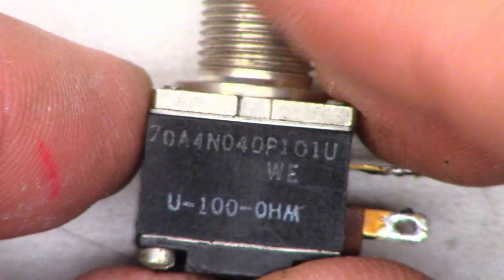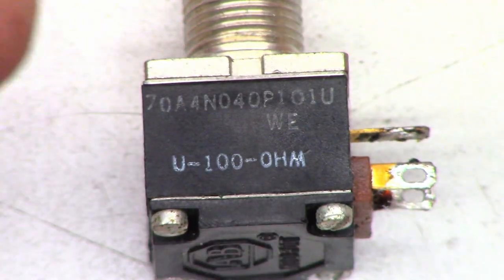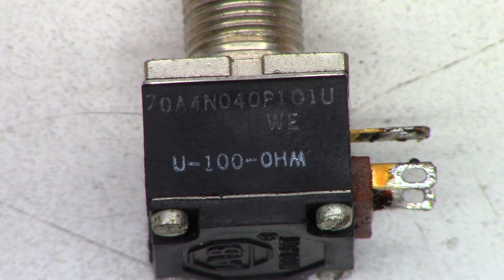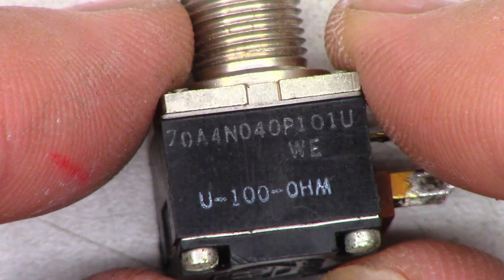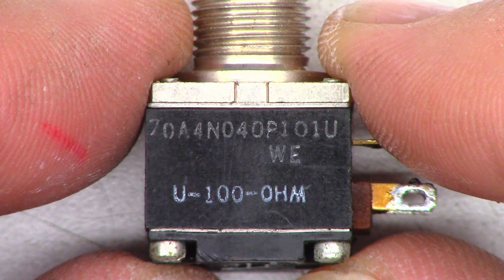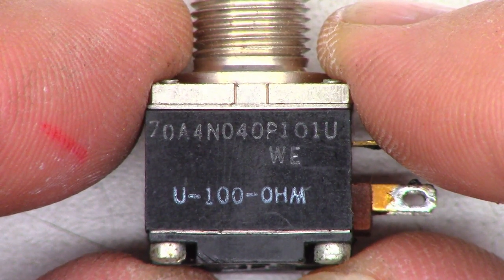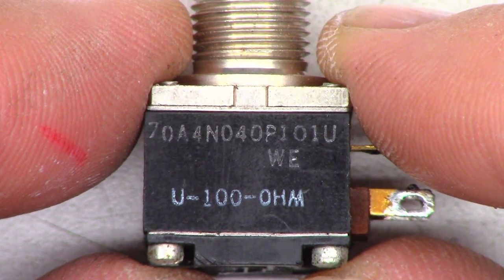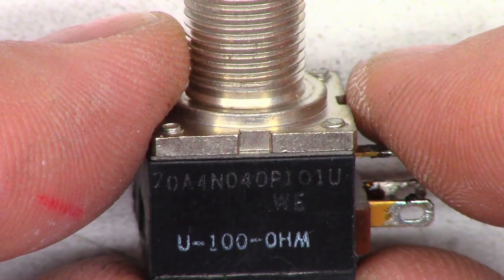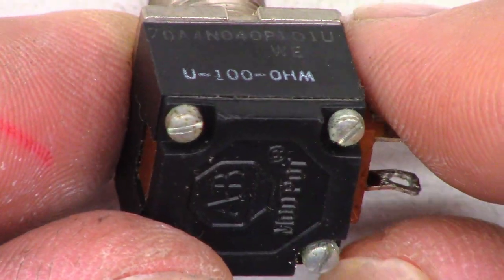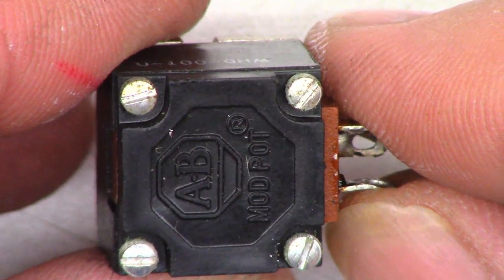Because this is an Allen Bradley potentiometer from the early 80s, it has screws in it, so I think I can actually take it apart and clean it. Here is the Allen Bradley potentiometer 100 ohm. And it looks like it has a part number of 70A4N040P101U. But as you can see, there are screws in it. So let's go ahead and take those out and see if we can clean this thing up a little bit.